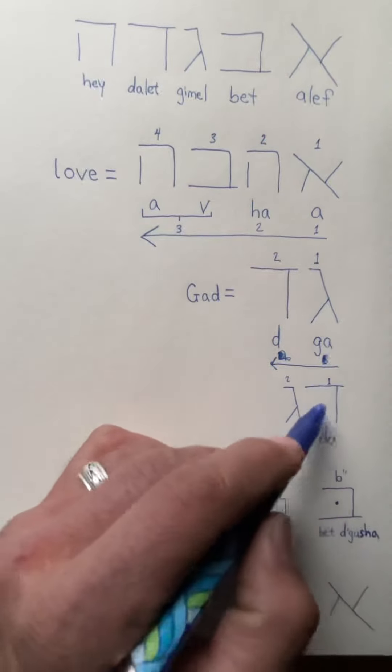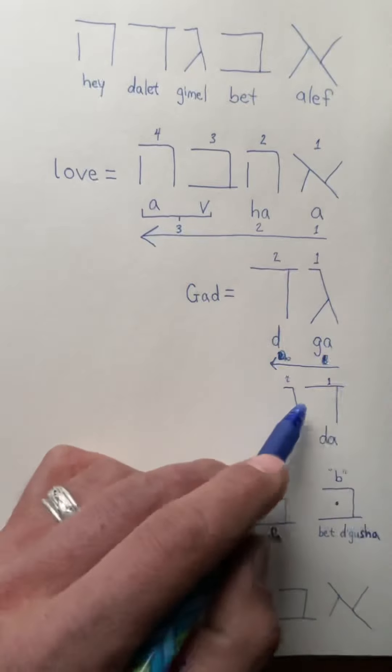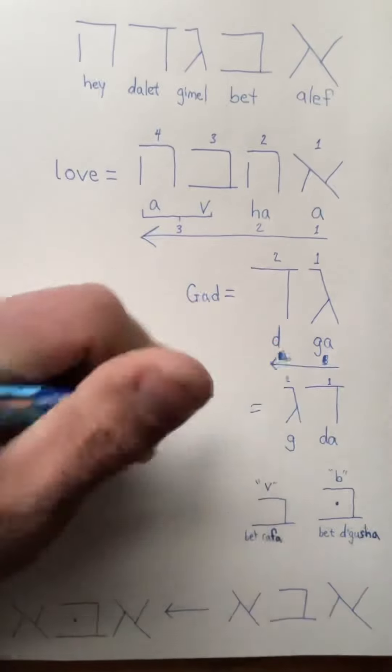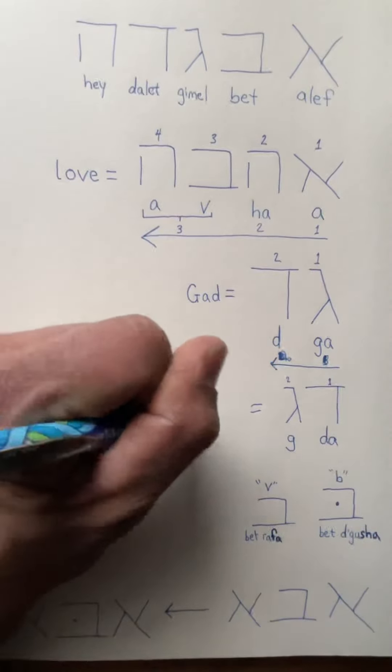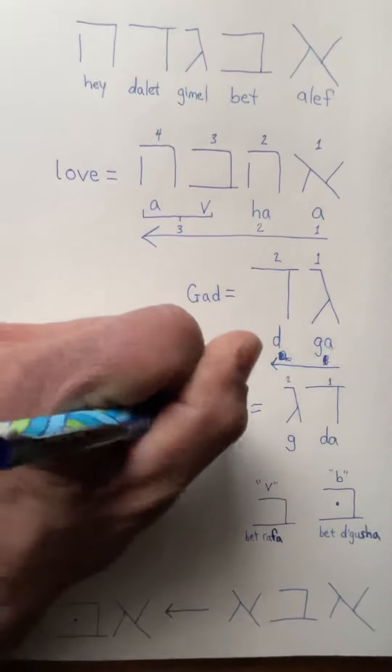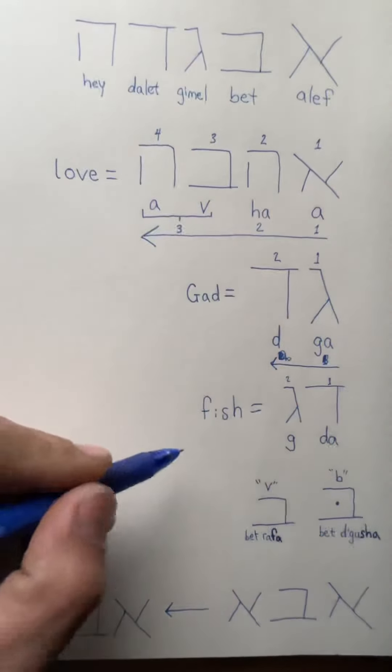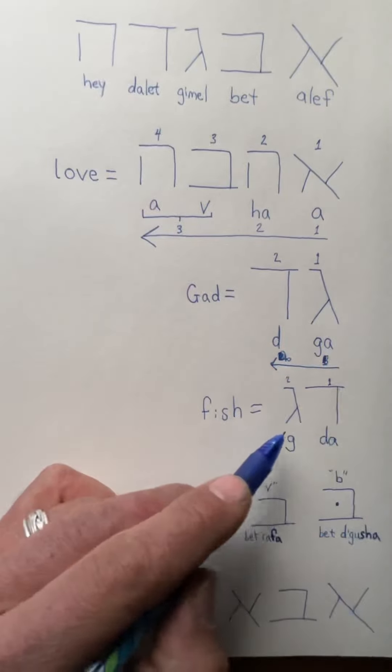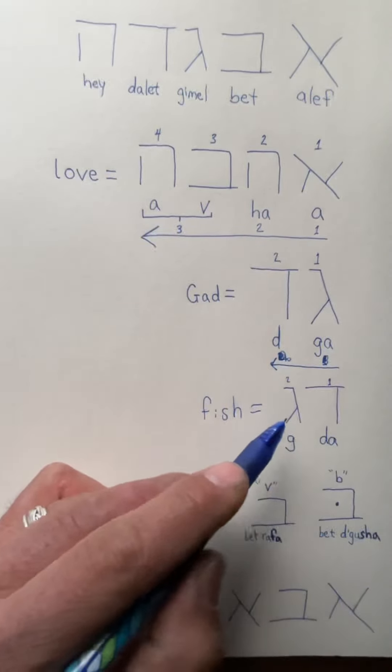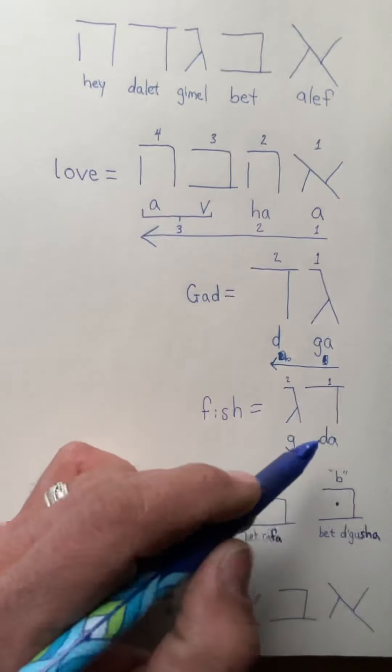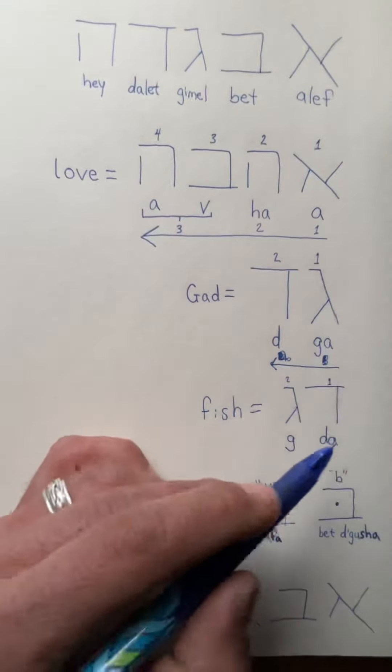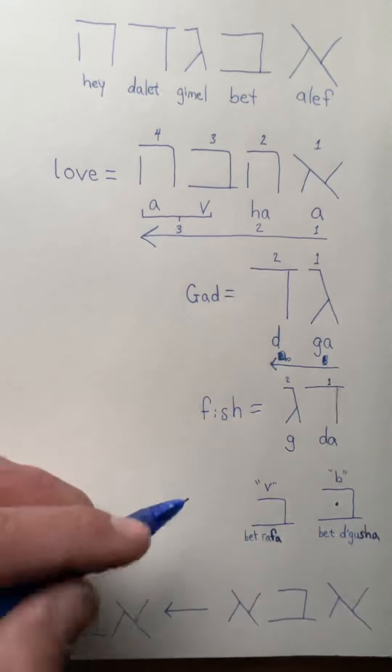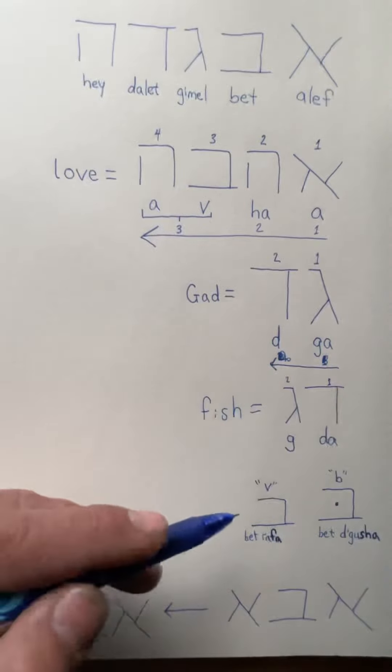And you see, if you reverse the letters, dalet-gimel is dag. And remember dag - oh yeah, I didn't write it here - dag is a fish. So dag means fish, which is super confusing, right? So you see, the gimel there represents the G sound and the dalet here is D plus A. You might be wondering where are these vowels coming from. In Hebrew they didn't write vowels.